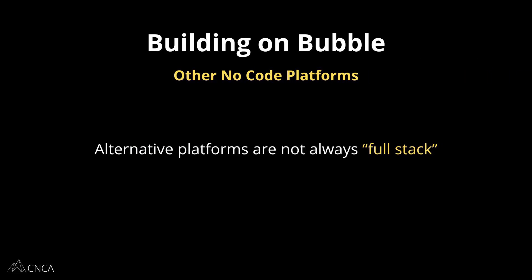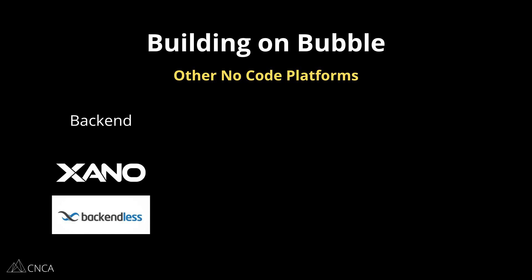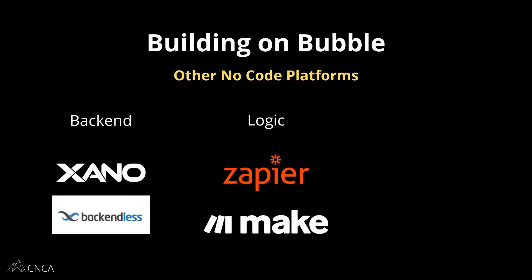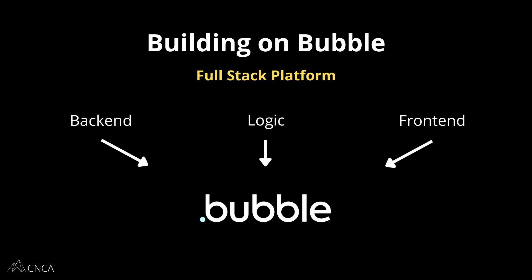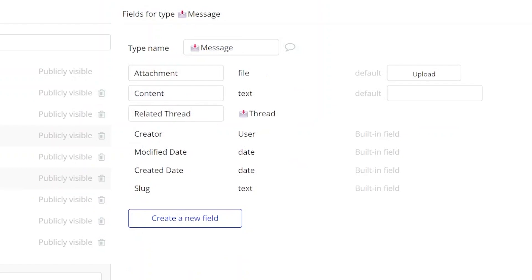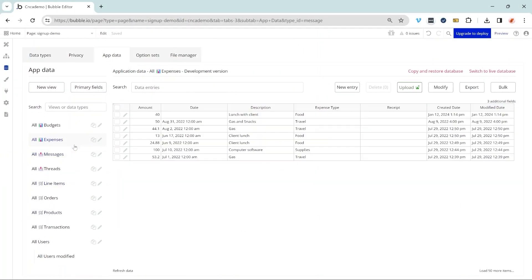Every app is going to have different requirements. Some platforms prioritize certain areas, such as back-end platforms like Xano, or logic and integration platforms like Zapier. Platforms like Glide and Webflow support professional front-end experiences with some limitations or dependencies on back-end connections. We've found that Bubble offers the same capabilities as all of the above and more — it's really a complete package — and we've heard from our own founders that the full-stack option with each component offering advanced capabilities has been quite valuable.